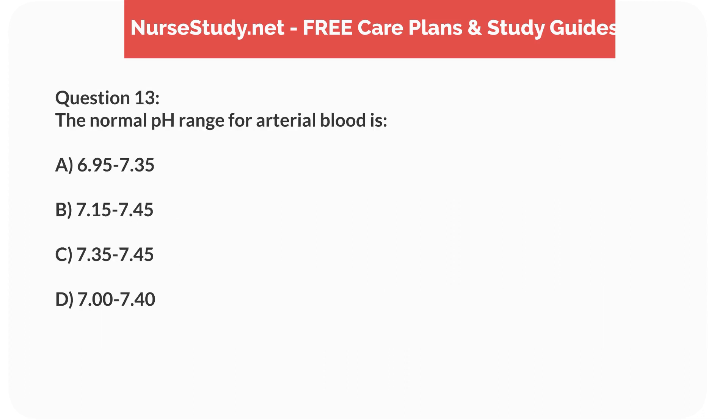Question 13. The normal pH range for arterial blood is: A. 6.95 to 7.35. B. 7.15 to 7.45. C. 7.35 to 7.45. D. 7.00 to 7.40.